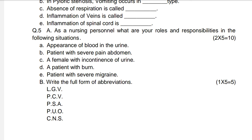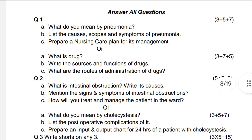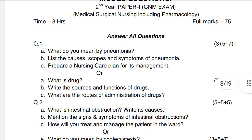Write the full form of the following abbreviations — five marks: LGV, PCG, PCV, PSA, CNS. This completes the question paper for GNM second year students in Medical Surgical Nursing including Pharmacology.